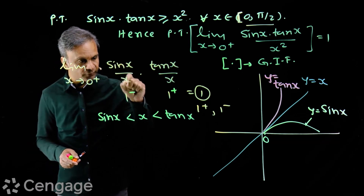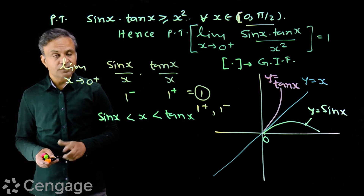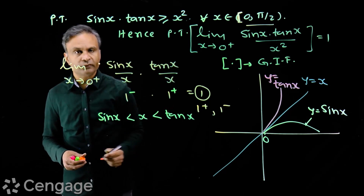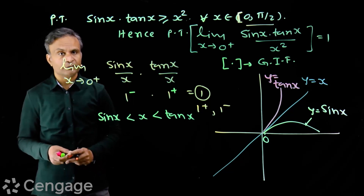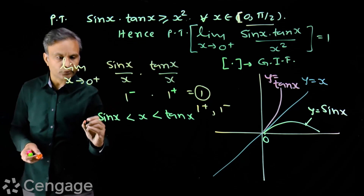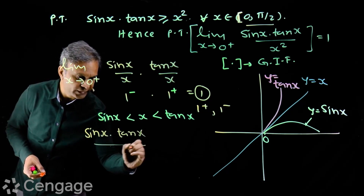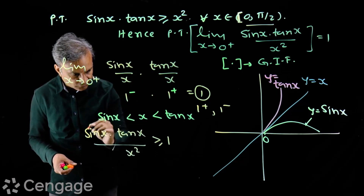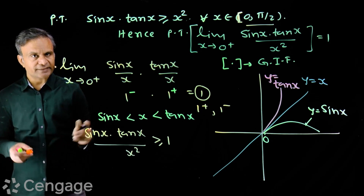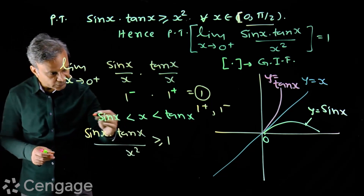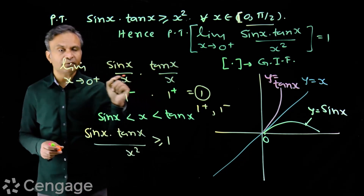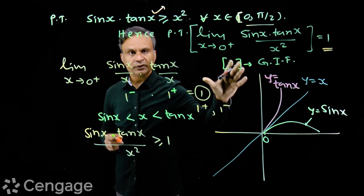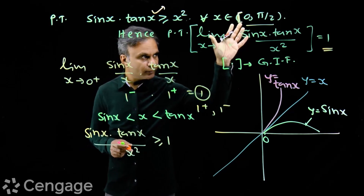Now we understand why this inequality is needed here. It is difficult to comment on the product value from that approach alone. So we use the inequality: since sin x · tan x ≥ x², we have sin x · tan x / x² ≥ 1. So definitely, as x → 0⁺, this ratio approaches 1 but from above — the limiting value is 1⁺. Therefore the greatest integer of 1⁺ is 1. This is why the inequality is required to find the value correctly.